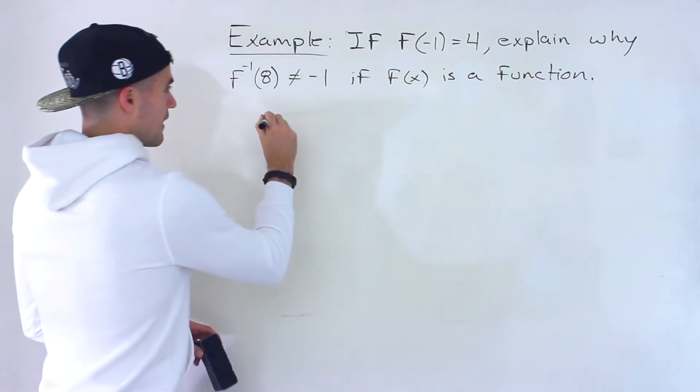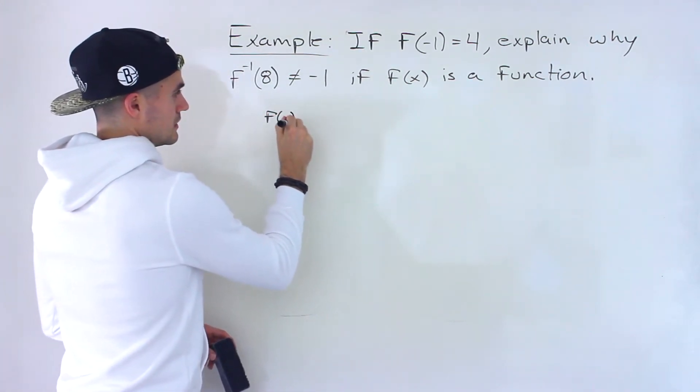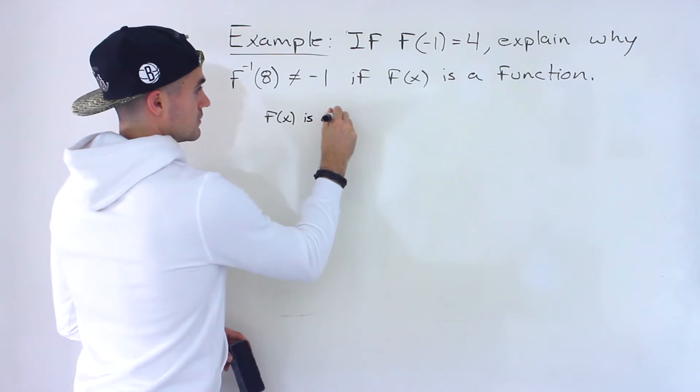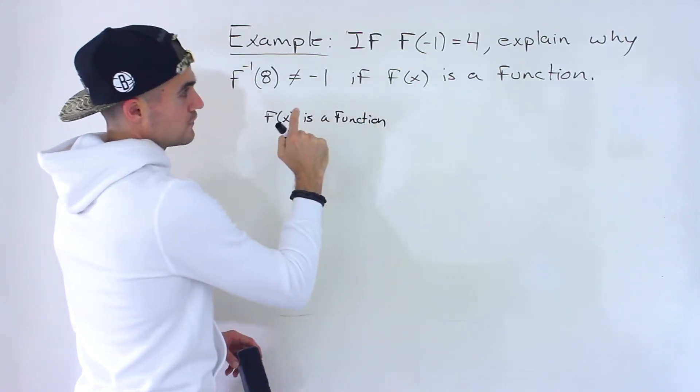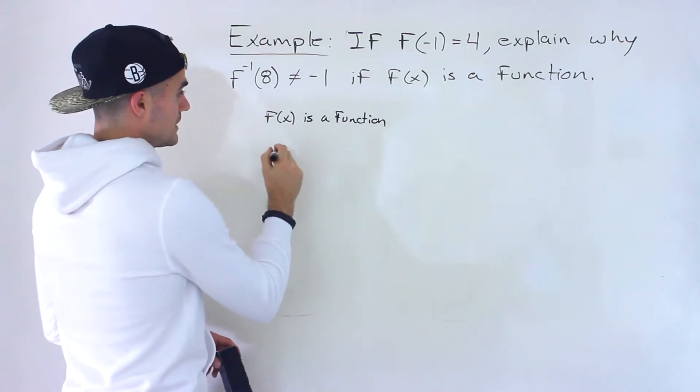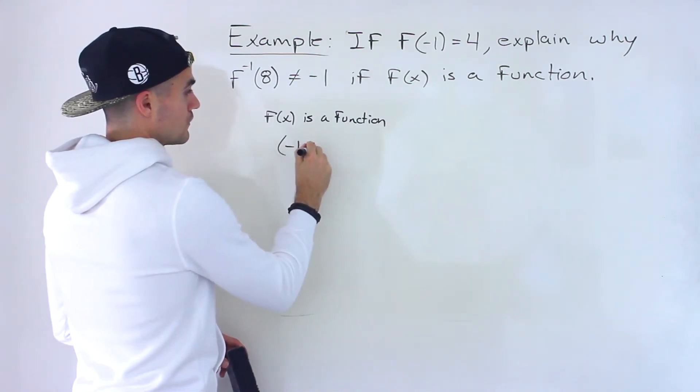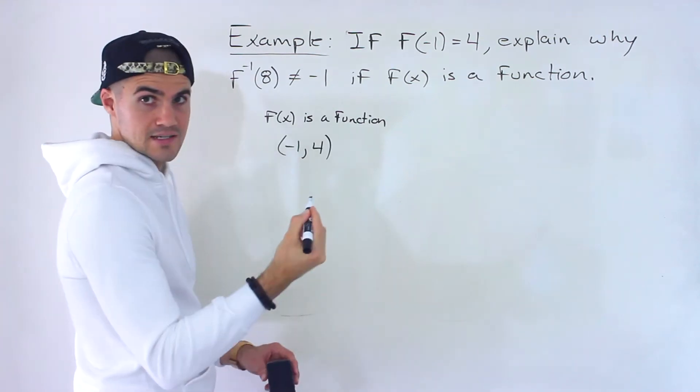So we're told that f of x is a function, right? And notice that we're told f of negative 1 is equal to 4, which means that on the function the coordinate negative 1 and 4 exists.